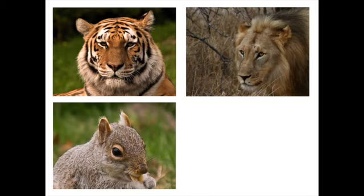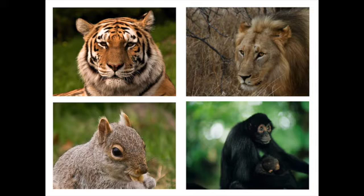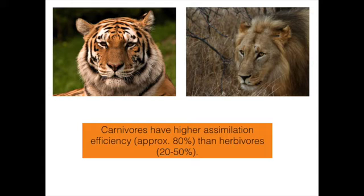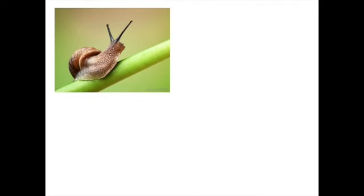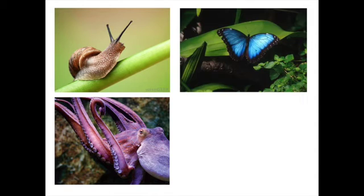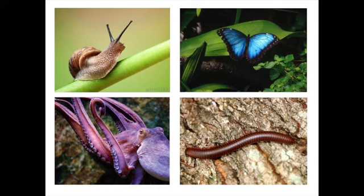Assimilation efficiencies vary widely among ectotherms and endotherms. Endotherms are much more efficient than ectotherms. However, carnivores — even ectothermic ones — have a higher assimilation efficiency of approximately 80% than herbivores at 20–50%. Production efficiency varies mainly according to taxonomic group. Invertebrates in general have high efficiencies of 30–40%, losing relatively little energy as respiratory heat. Among vertebrates, ectotherms have intermediate production efficiency values of approximately 10%. In contrast, endotherms, with their high energy expenditure for maintaining constant body temperature, convert only 1–2% of assimilated energy into production.